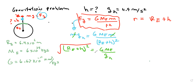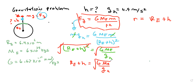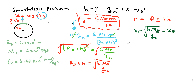Then we take the square root of both sides, so the square cancels. R_E plus h equals the square root of G times the mass of the Earth over g_h. Therefore h equals the square root of the gravitational constant times the mass of the Earth divided by g_h, minus R_E. Now we can just plug in our data.